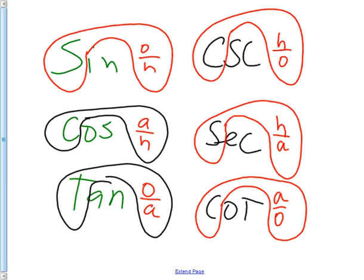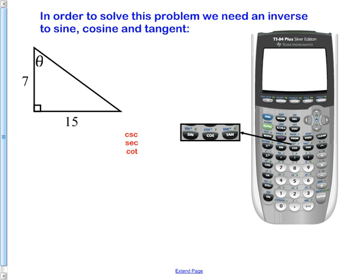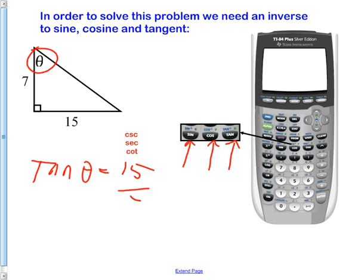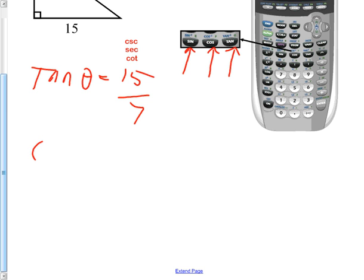So back to these kind of problems. This one that we just did a second ago, we could have done it with a different function if we wanted to. But these work the best, sine, cosine, and tangent, because there's a button on your calculator. This one again was tangent of theta equal to 15 over 7. And we did inverse tangent to get the answer. But if we had wanted to, we could have set up the same problem and said cotangent of theta would be 7 over 15.